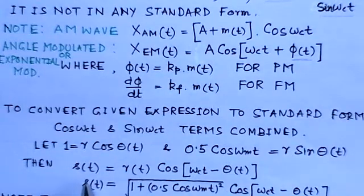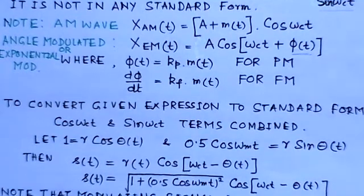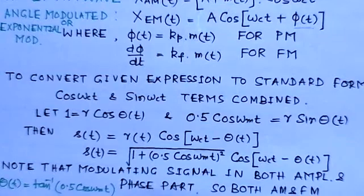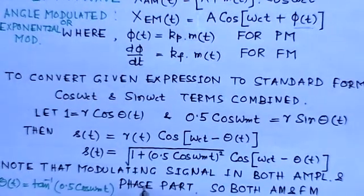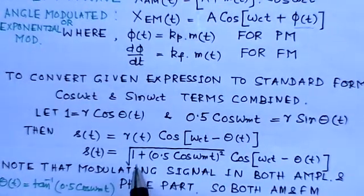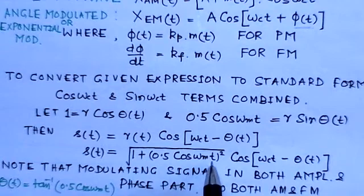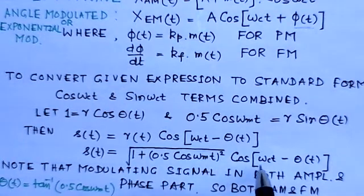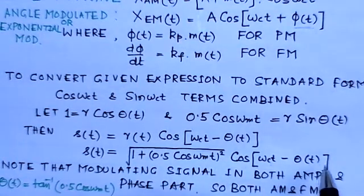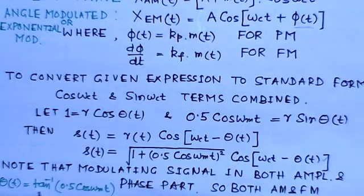Then we can write the expression for z(t) as r(t)·cos[ω_c·t - θ(t)], where r(t) = √[1 + (0.5·cos(ω_m·t))²]·cos[ω_c·t - θ(t)] and θ(t) = tan⁻¹[0.5·cos(ω_m·t)].